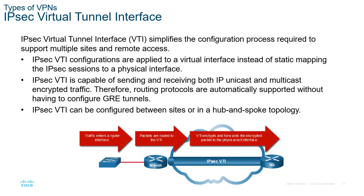The IPSec portion will build what is called an IPSec Virtual Tunnel Interface, or IPSec VTI. Traffic is sent from the end node to the branch router; the branch router sends it via the VTI interface. The VTI interface is the IPSec tunnel — it encrypts the data and forwards it as a new logical interface between the source and destination routers. The IPSec tunnel builds an encrypted tunnel, and access is gained using the virtual tunnel interfaces on both sides. The IPSec VTI can be configured between sites or in a hub-and-spoke topology.